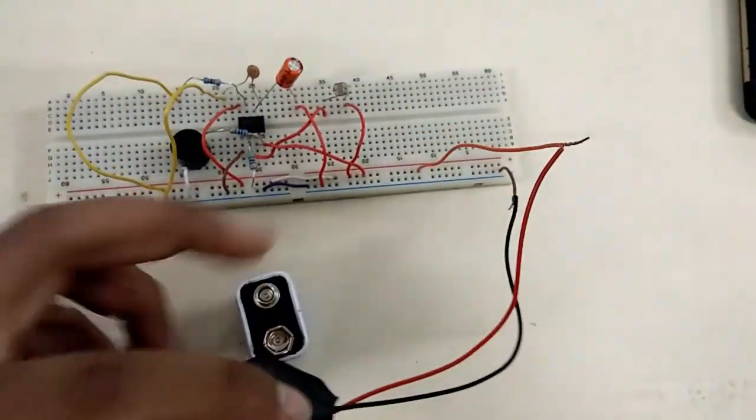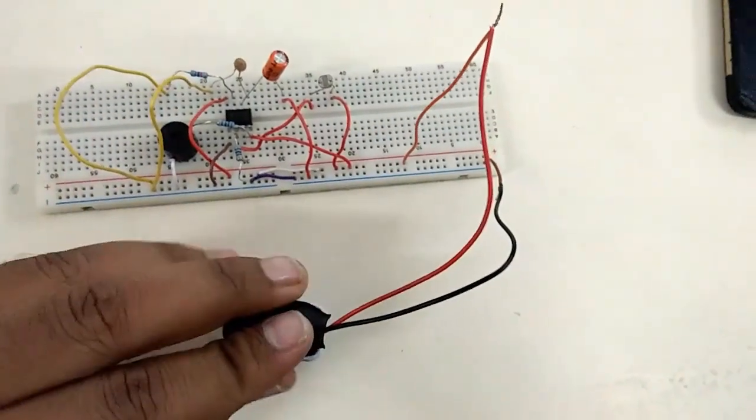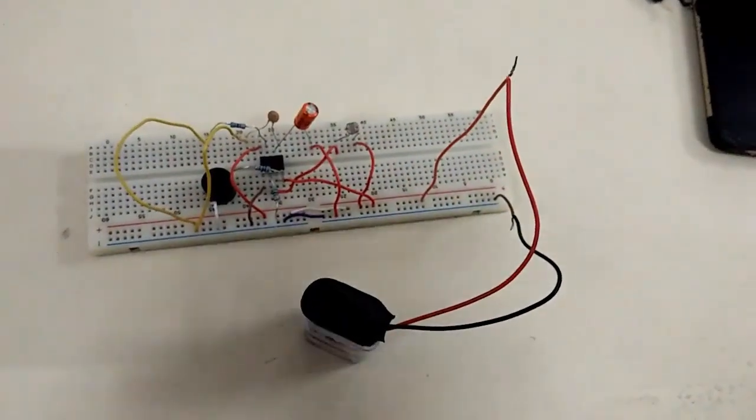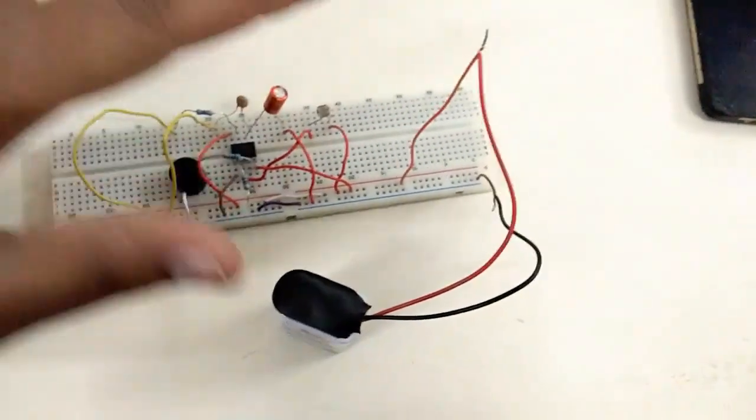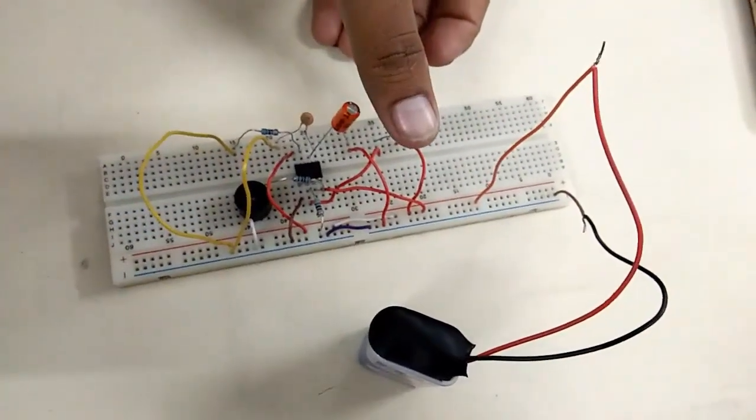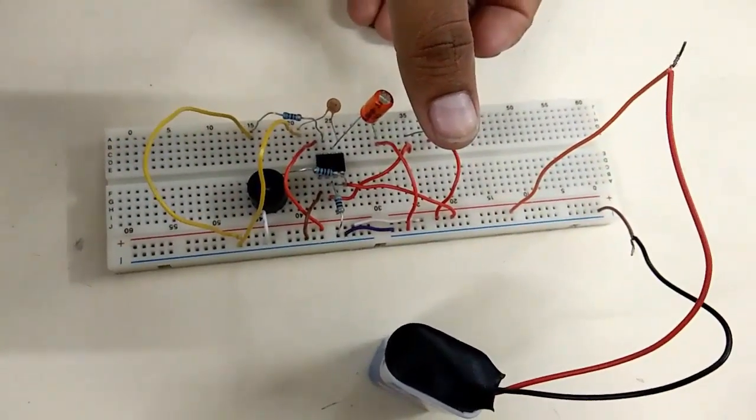So now let's check it. Let's connect it with the 9-volt power source. Now the circuit is activated. I will put my hand over the LDR so that darkness will be detected. As I put my hand, you can see the buzzer has started producing sound.